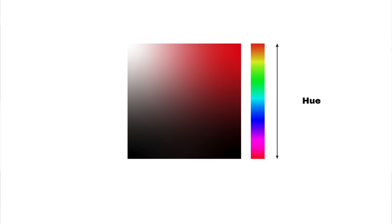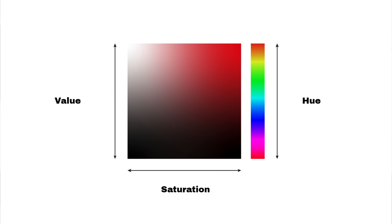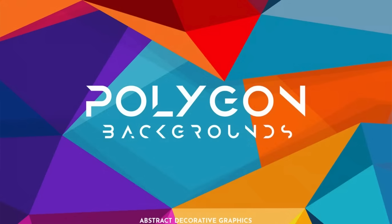Hue is any color on the wheel that has its maximum saturation. When we speak about saturation, we're speaking about the vibrancy of the color — a desaturated color is dull, and a very saturated color is the most vibrant. Value has to do with how light or dark a color is. Here we have a beautiful polygon background image — very abstract, with many colors of different hues, saturations, and values, which we can see when we turn it into black and white.